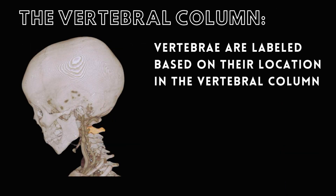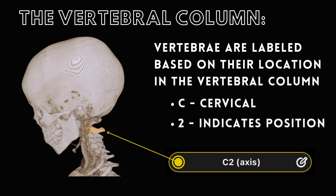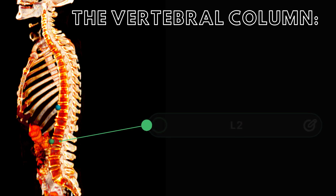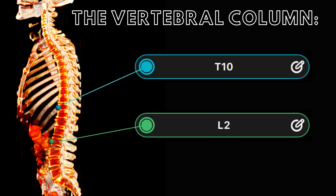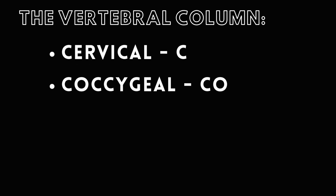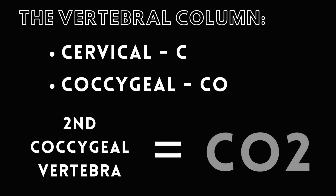Vertebrae are labeled based on their location in the vertebral column. For example, the second cervical vertebra, known as the axis, is labeled C2 — C for cervical, and the number 2 indicates its position. Similarly, the second lumbar vertebra is designated L2, and the tenth thoracic vertebra is labeled T10. To differentiate between cervical and coccygeal vertebrae, since both start with C, coccygeal vertebrae are labeled with CO, so the second coccygeal vertebra would be CO2.